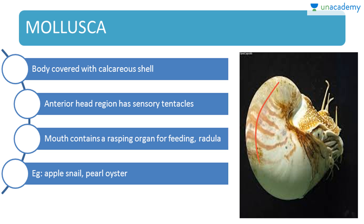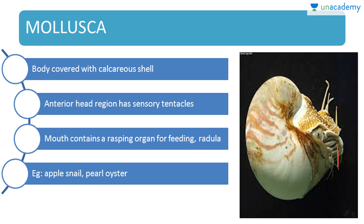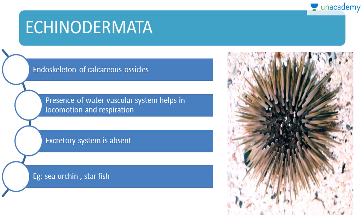Moving on to Mollusca — their body is covered with calcareous shells made of calcium. The anterior head region has sensory tentacles, and the mouth contains a rasping organ for feeding called the radula. Examples: apple snail and pearl oyster.